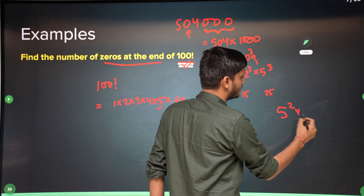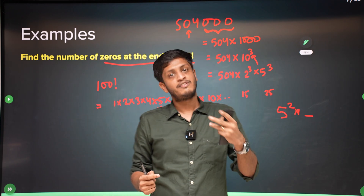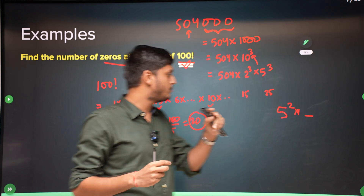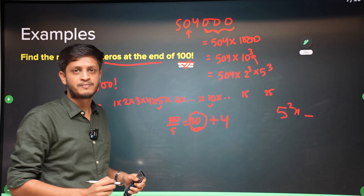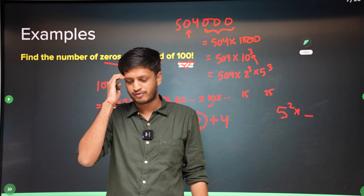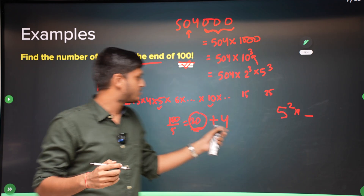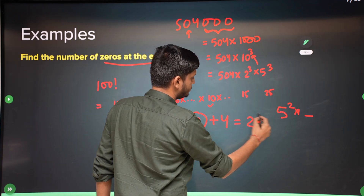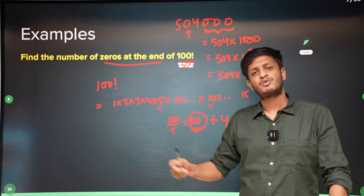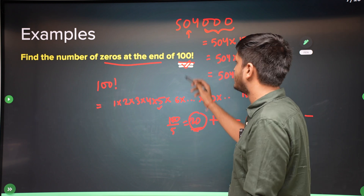No number up to 100 can have three fives, because 5³ = 125 > 100. So the total power of 5 in 100! is 20 + 4 = 24. Therefore, the number of trailing zeros at the end of 100! is 24. You don't need to calculate the power of 2 — the power of 5 is always the minimum, and that is your answer.